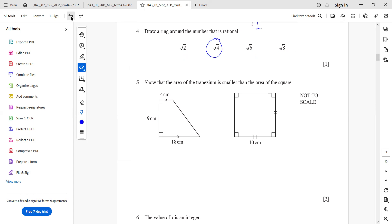Question number 5 now. Show that the area of the trapezium is smaller than the area of the square. First of all, let us calculate the area of the square. Area of the square is given by the formula length squared. This is going to give 10 squared which is 100 centimeter squares.